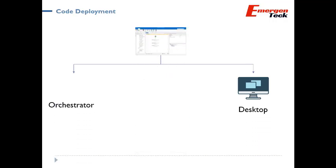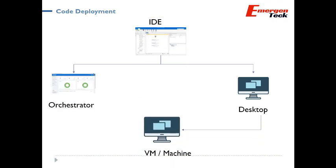In case we don't have Orchestrator in place, the process is straightforward. From the IDE, the code will be published on the desktop, and from the desktop we can deploy the code or binary where we have UiPath Agent installed. In this case, we don't have Orchestrator to control and monitor, so it's our sole responsibility to ensure the bots are running and that we provide enough support to keep them available.